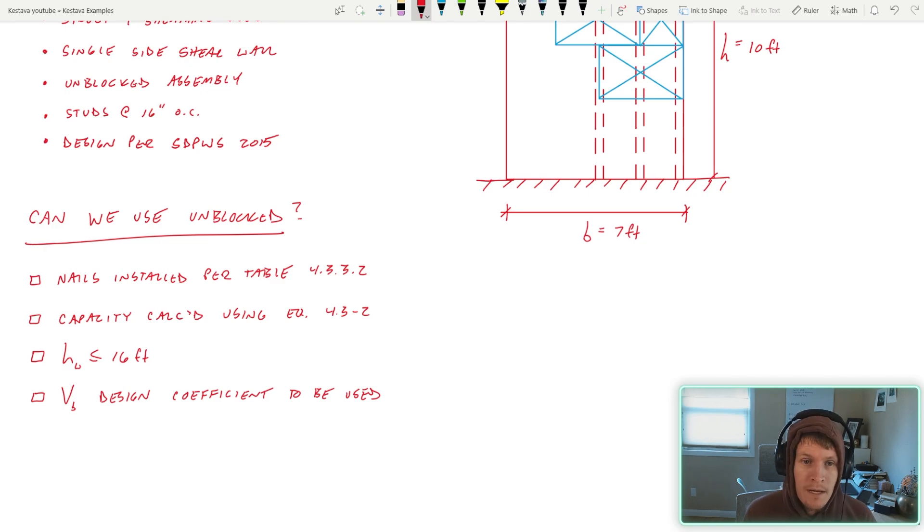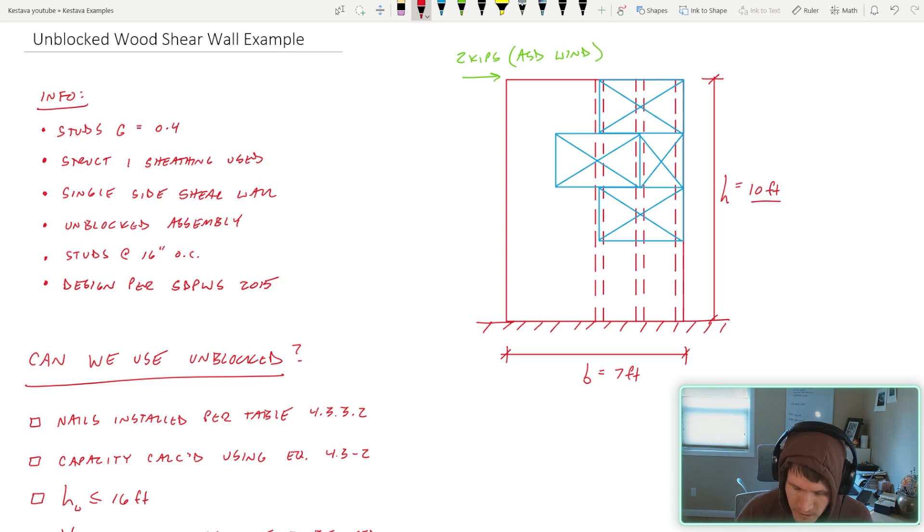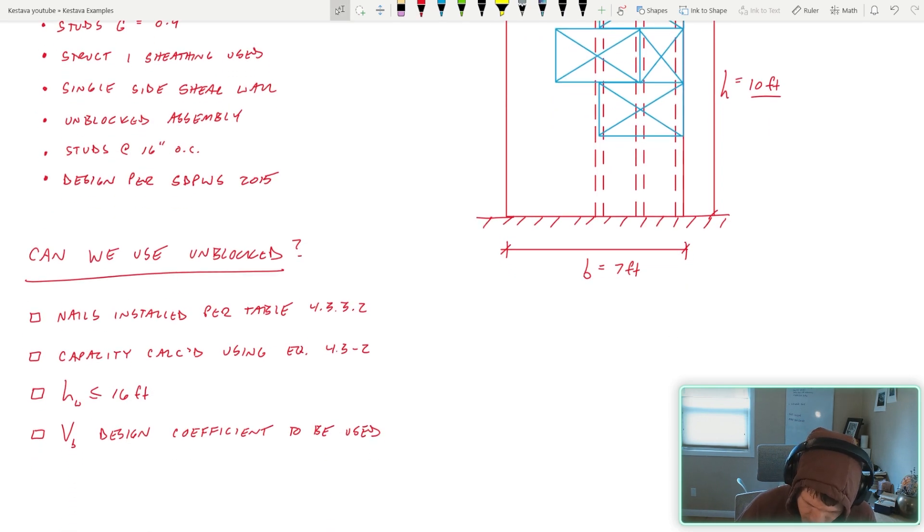They're as follows: nails installed per table 4.3.3.2, I'll have that up here in a moment. Your capacity needs to be calculated for your unblocked shear wall using equation 4.3-2 in the SPID WHIZ. The height of your wall needs to be less than or equal to 16 feet, so they cap how tall your wall gets to be for an unblocked condition. We have a 10-foot wall today, so we meet that criteria right off the bat.